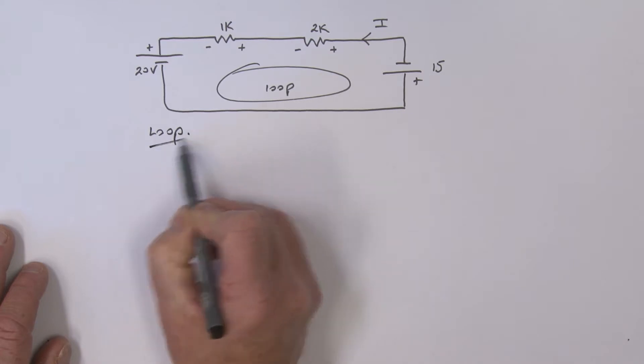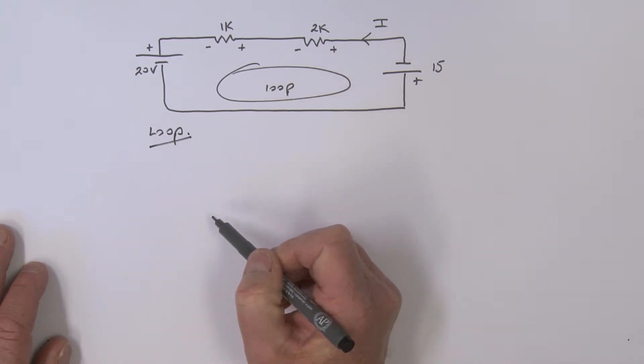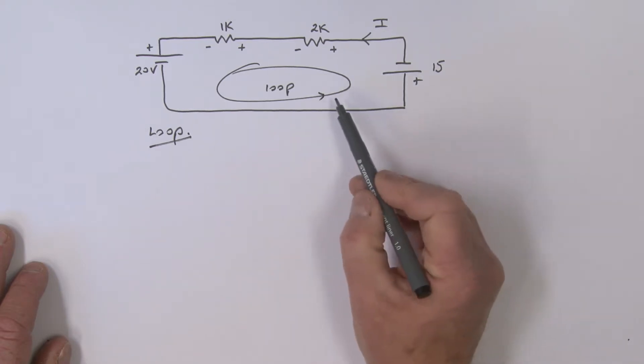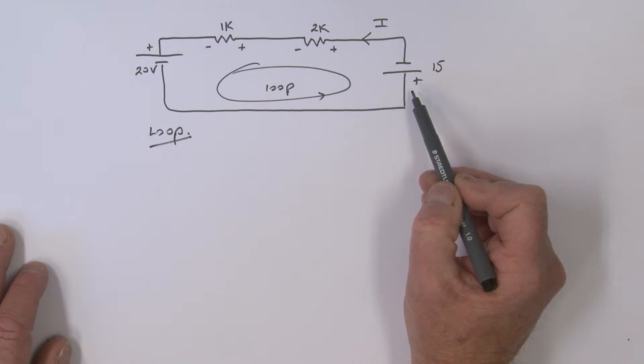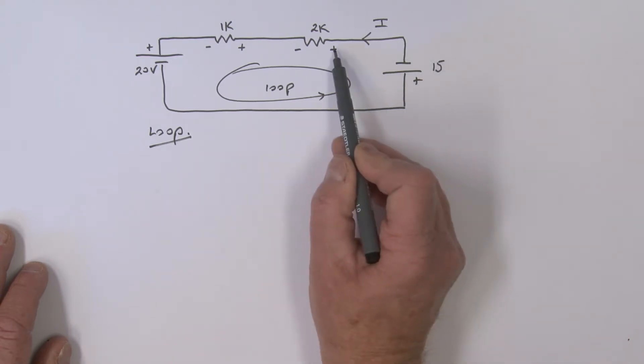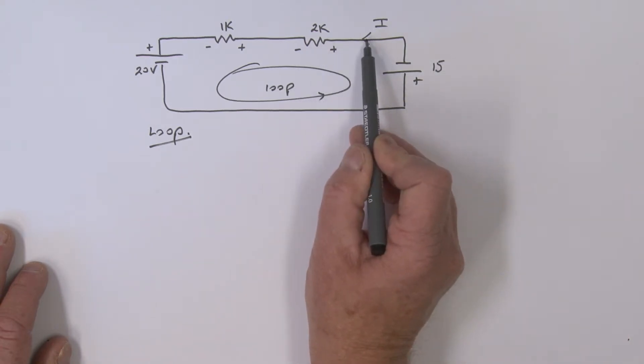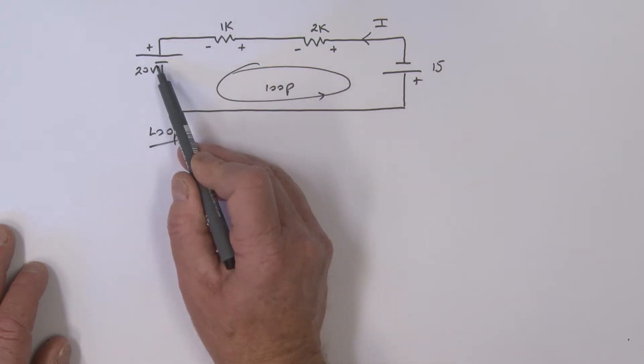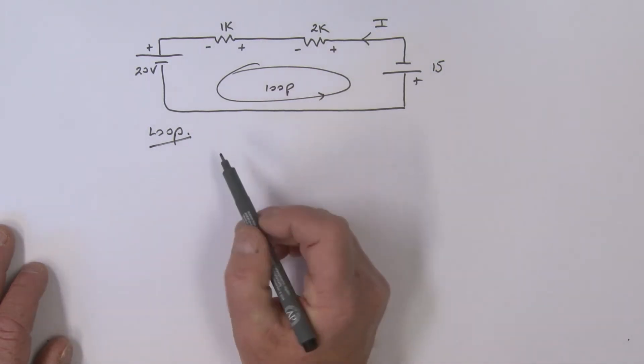Here's our loop. Which way around the loop? It doesn't make any difference, so let's go this way. Now before, I had said to you: as you sum the voltages, as you go from a high to a low, you're falling and we'll call it negative. So we're going high to low—that would be minus 15. High to low, that would be minus I×2K. High to low, that would be minus I×1K. High to low, that would be minus 20, and all of that equals zero. That's a great way to do it.